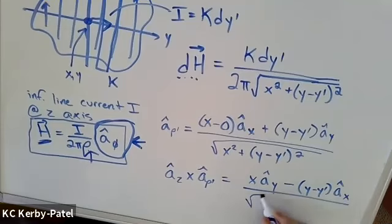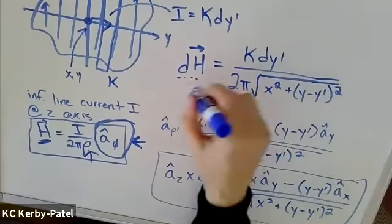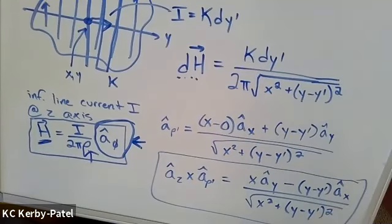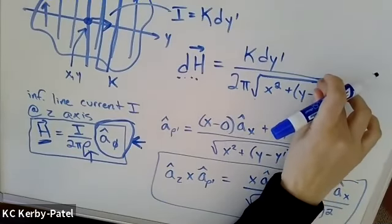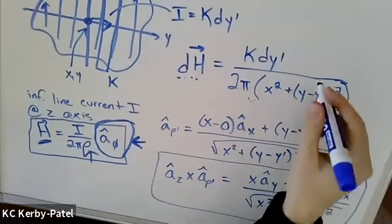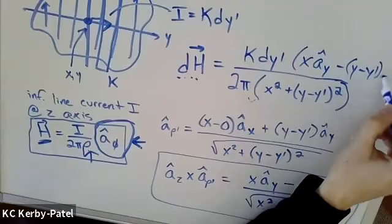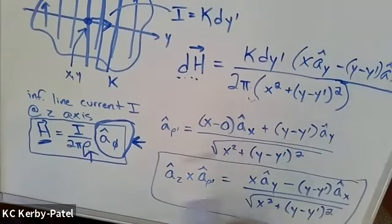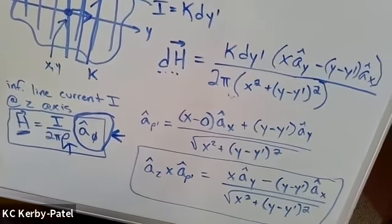All over that same distance: x squared plus (y minus y prime) squared. To put this expression into my differential magnetic field contribution, I'm going to notice that I already have rho in here one time—replacement rho—so instead of making it complicated, I'm just going to put in parentheses and remove the square root. And then on the top, I'm going to have this vector: x a hat y minus (y minus y prime) a hat x.